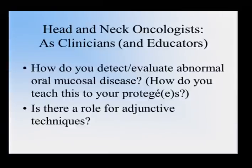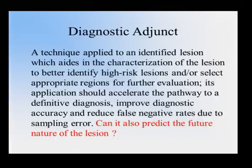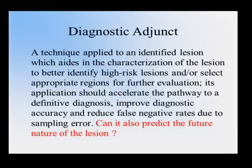As head and neck oncologists, how do you detect and evaluate abnormal oral mucosal disease, and how do you teach your protégés? Because they're going to take that into the world. I really wanted to talk about the adjunctive techniques — is there a role for them? A diagnostic adjunct is a technique applied to an identified lesion which aids in the characterization of the lesion to better identify high-risk lesions or select appropriate regions for further evaluation. Its application should accelerate the pathway to a definitive diagnosis, improve diagnostic accuracy, and reduce false negative rates due to sampling error. Maybe in the future it can also predict the nature of that lesion and what it's going to do over time.